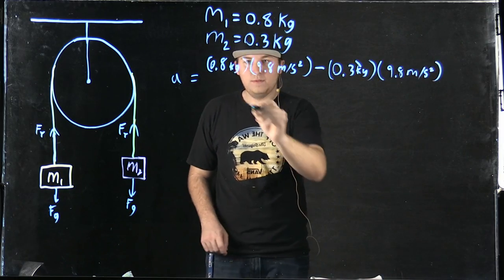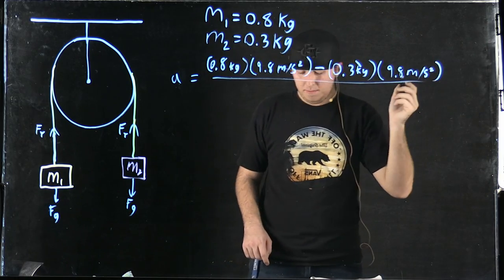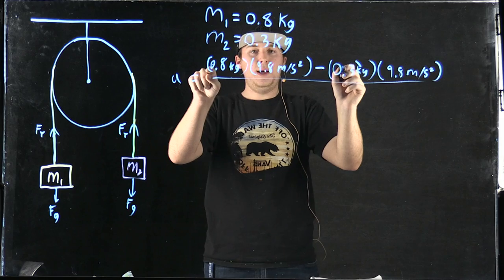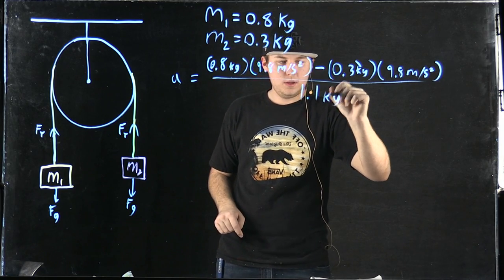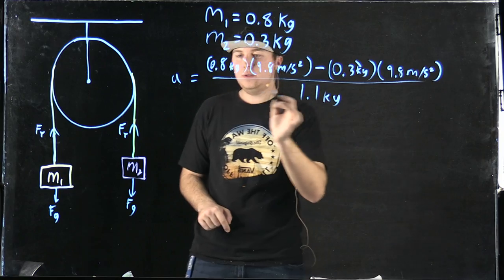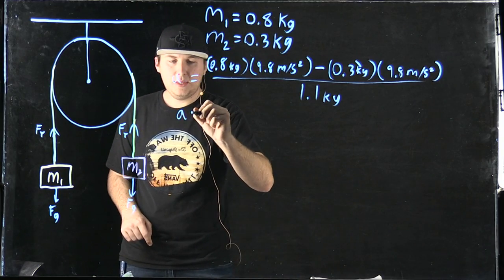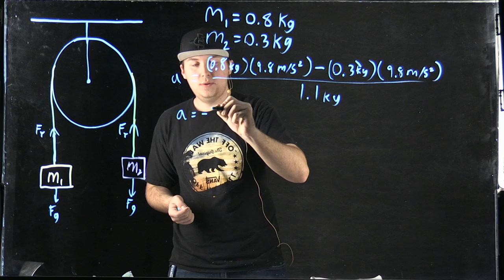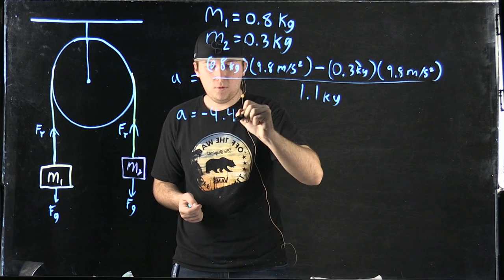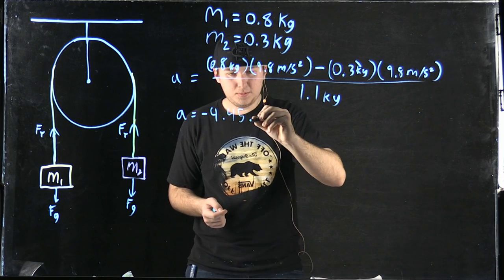and then divide that whole thing by the combined mass. So we get 1.1 kilograms. When you solve this through, the acceleration magnitude equals negative 4.45 meters per second squared.